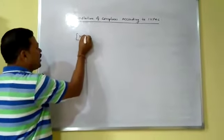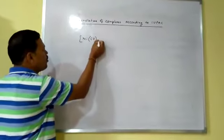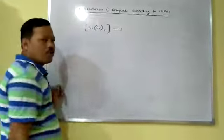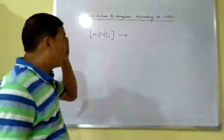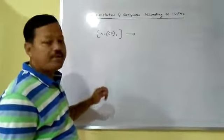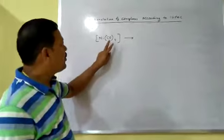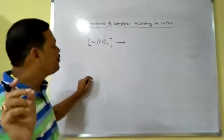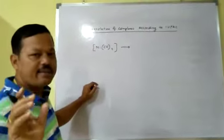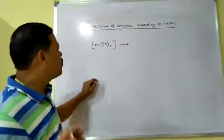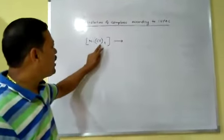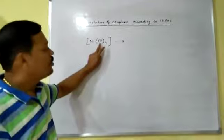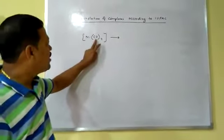Suppose this is one complex: Ni(CO)₄. When you write the name of the complex according to IUPAC, first you have to write the name of the ligand. As I have given a table of ligand names, you should know them. Here the ligand is CO, which is called carbonyl as a ligand.